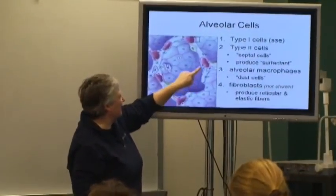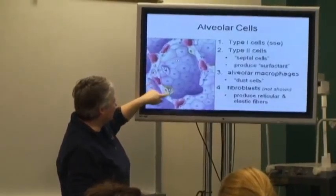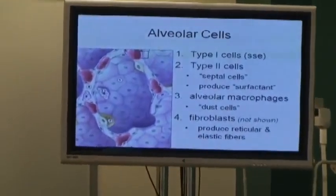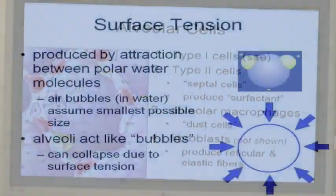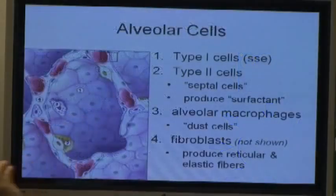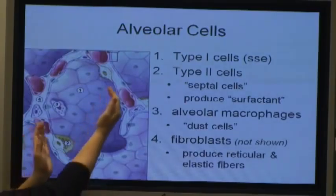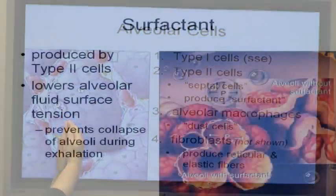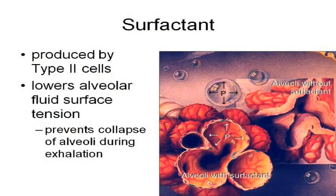It puts a real thin film on the inside of the alveolus, and what that does is it reduces the surface tension of water. Remember that water molecules are polar, they attract one another. So without the surfactant, these alveoli - these are tiny, microscopic - would tend to collapse, would tend to stick together. The surfactant reduces that attraction between the water molecules, reduces that surface tension, so it allows the alveoli to stay open.